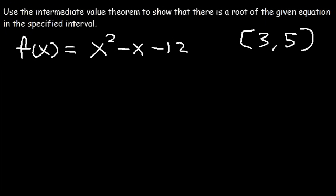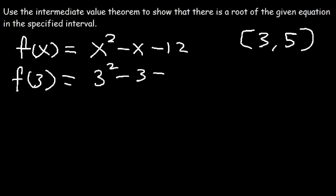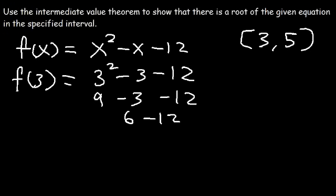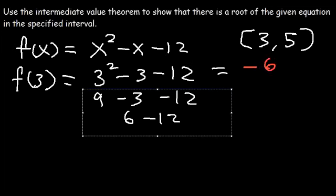First, let's make sure that f(3) and f(5) — one of them is positive and the other is negative. So let's calculate f(3). If we plug in 3 into the equation, it's 3 squared, which is 9 minus 3, which is 6. 6 minus 12 is negative 6. So we have a negative number, so then the other one has to be positive.